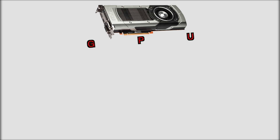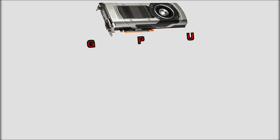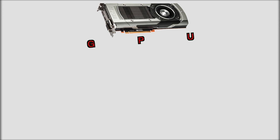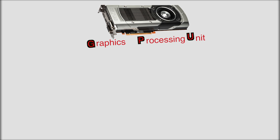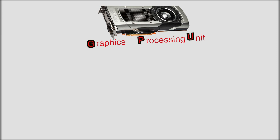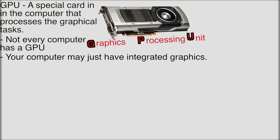GPU is kind of like CPU — it stands for Central Processing Unit. Both of those two terms have two words in common, and that kind of explains itself. A GPU processes graphics, and a CPU is the Central Processing Unit. It's a special card, and not all computers actually have a GPU — you could just have integrated graphics on your motherboard and CPU. This card is designed to process graphics alone, so that's its sole purpose: processing graphics.